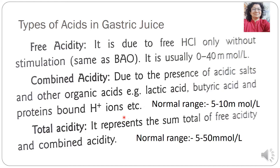The free acidity is because of H ions from hydrochloric acid, and the combined acidity is due to H ions contributed by lactic acid, butyric acid, and protein-bound H ions. Its normal range is 5 to 10 millimoles per liter. The third kind of acidity is known as total acidity, and it represents the sum total of free acidity plus combined acidity. Its reference range is 5 to 50 millimoles per liter.